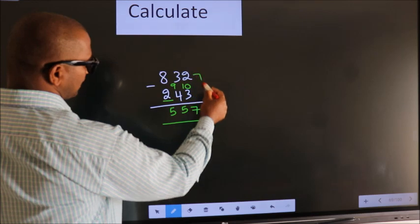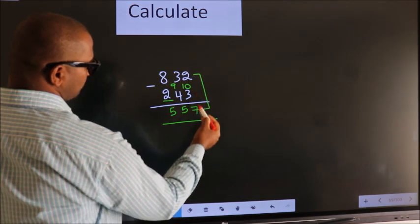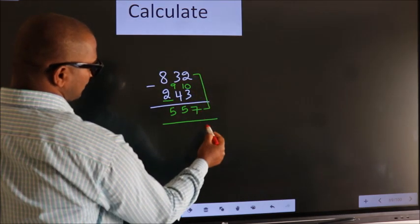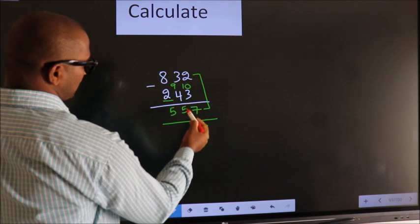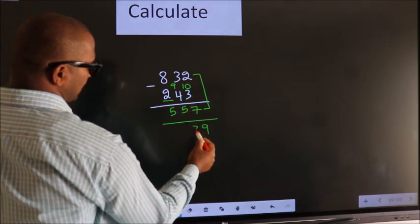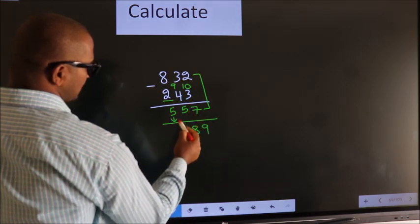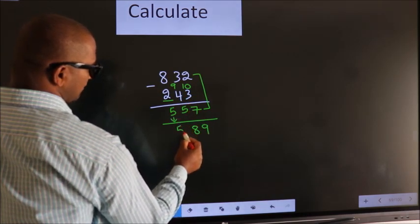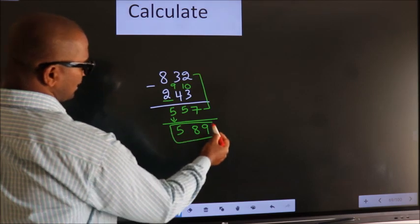Now add these two. 2 plus 7 is 9. 3 plus 5 is 8. The first digit you write as it is. So this is our answer: 589.